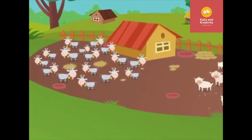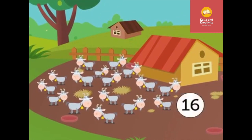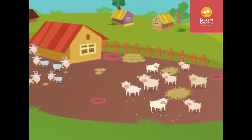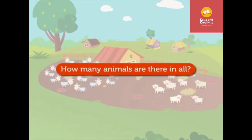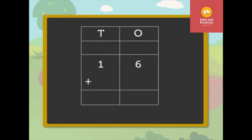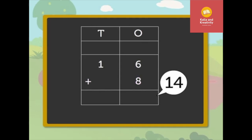Look at the herd of animals. There are sixteen goats and eight sheep in it. Now, let's see how many animals there are in all. Here we have to add sixteen and eight to find out the total number of animals. Add the ones, that is, six plus eight is equal to fourteen.